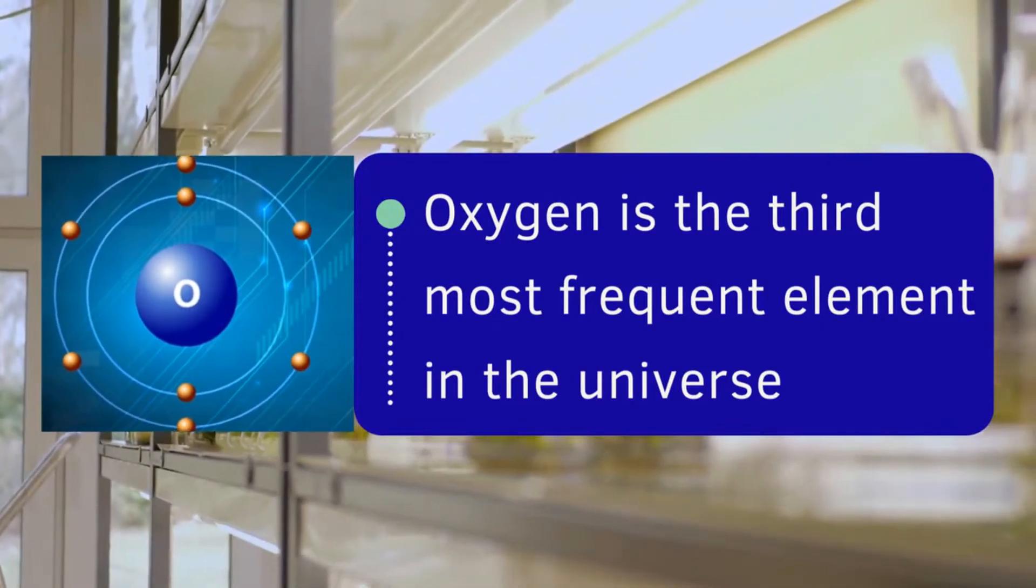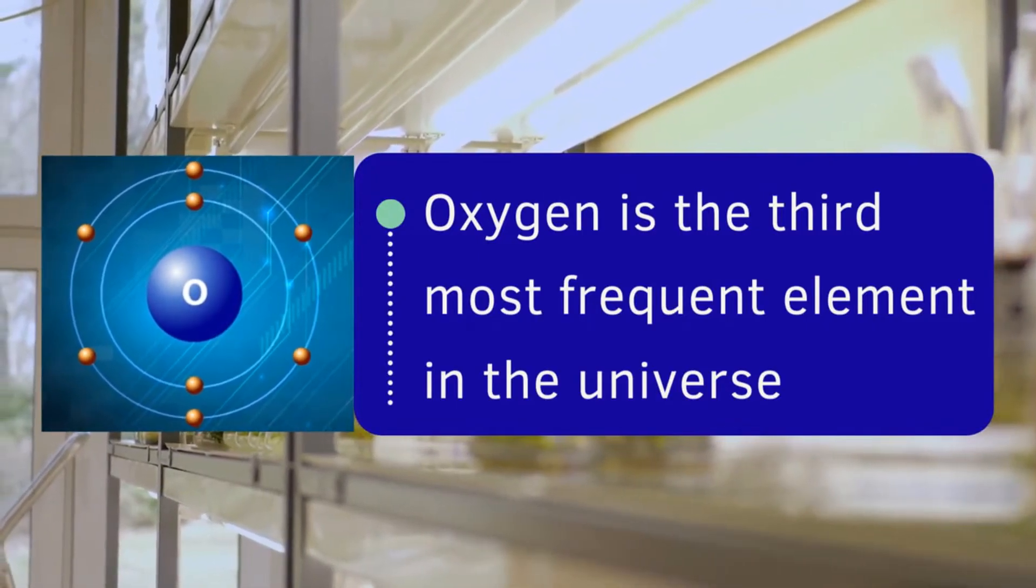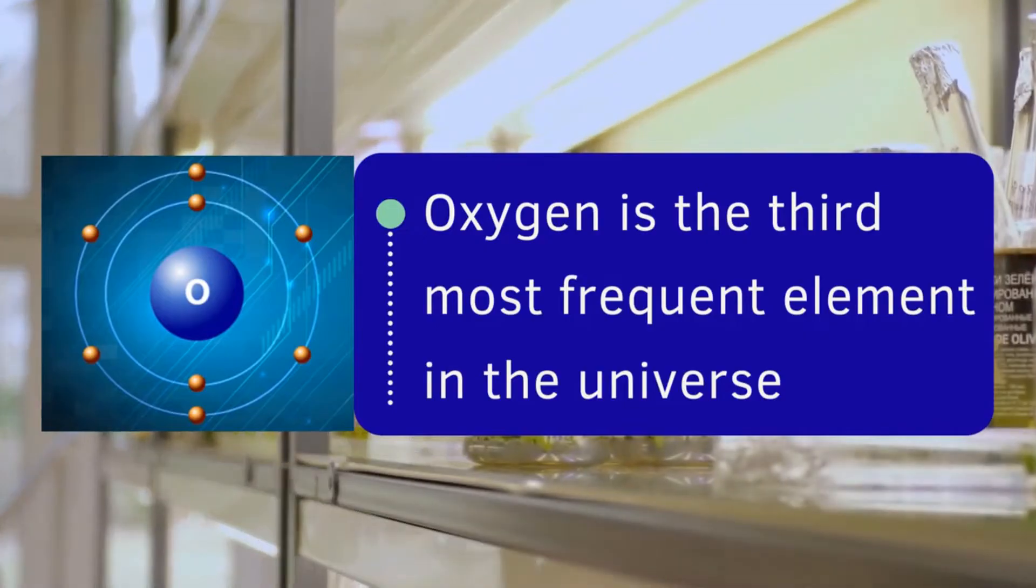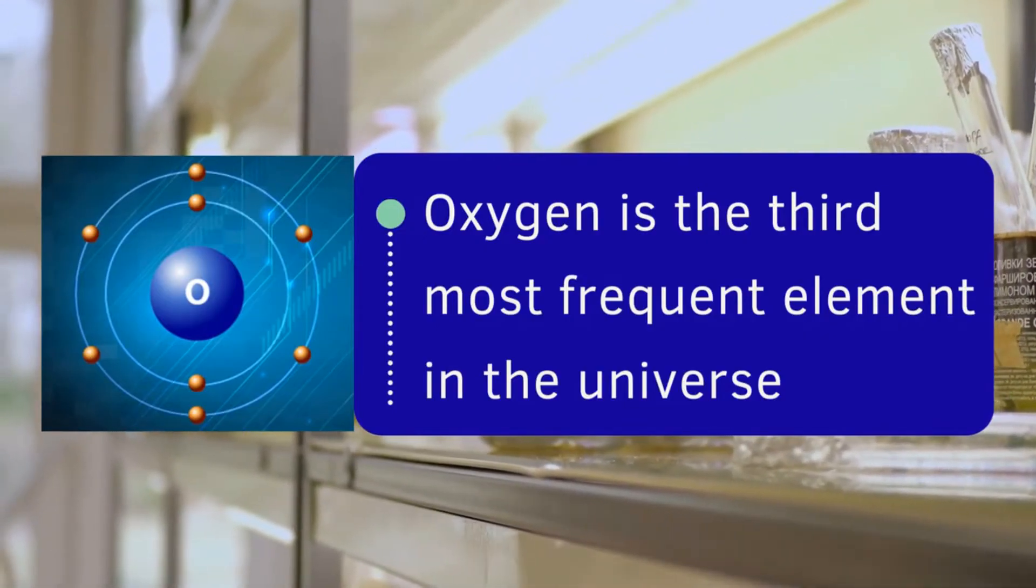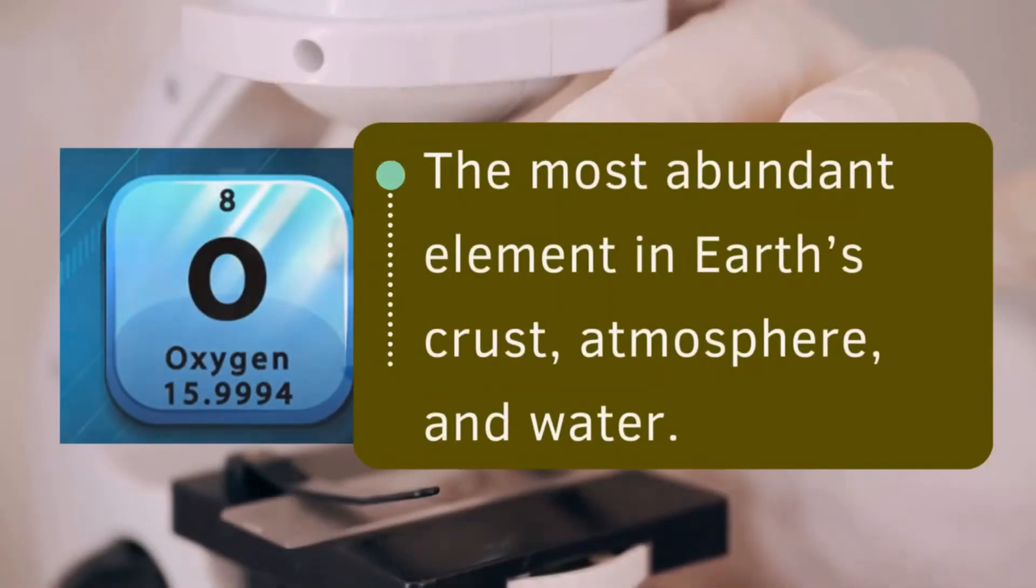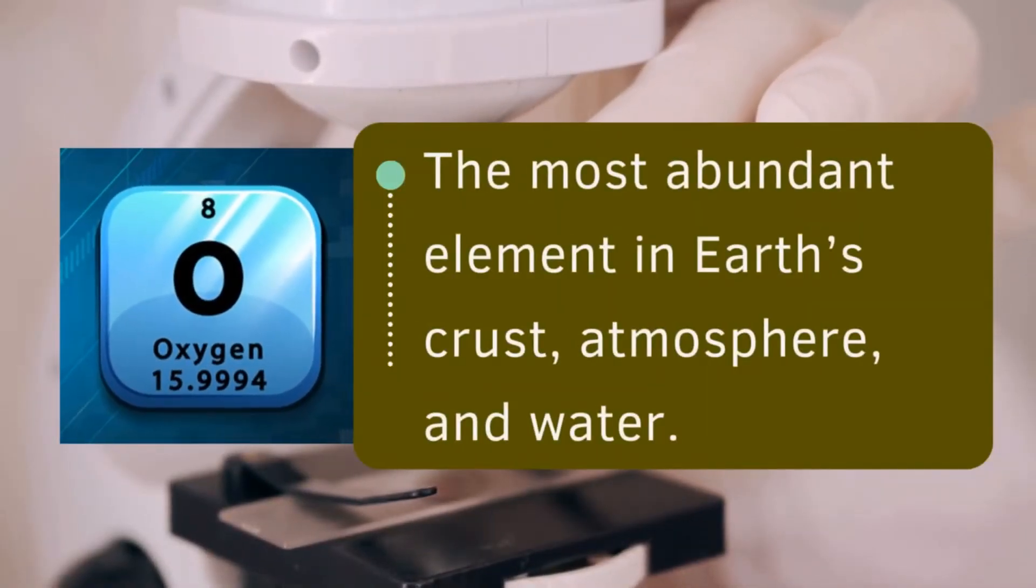Oxygen. After hydrogen and helium, oxygen is the third most frequent element in the universe. This isn't surprising when you consider that it's also the most abundant element in Earth's crust, atmosphere, and water.